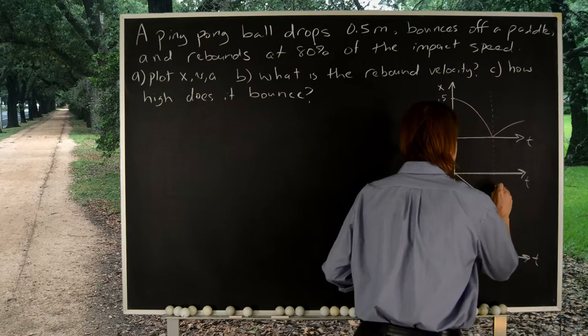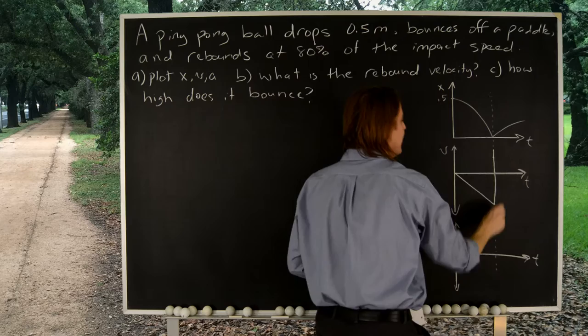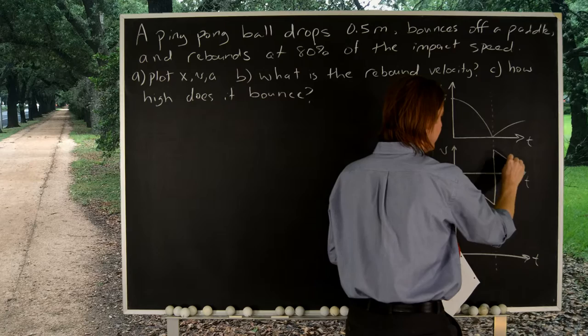It doesn't go up quite as high as it was down because 80%, right? So I won't draw it going quite as high. So that happens almost instantaneously, and then it continues to decelerate. Even though it's flying up, gravity is slowing it down. So the velocity time plot continues to come down like that, at the same slope that it was doing there.